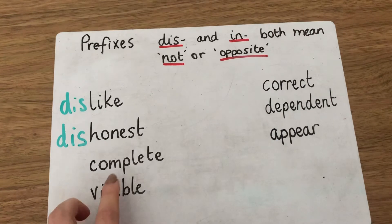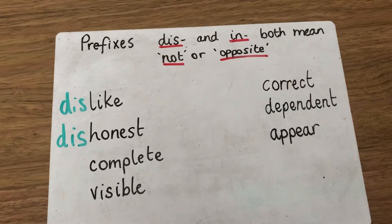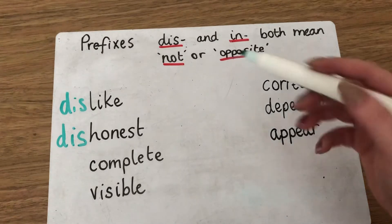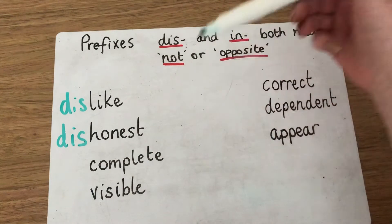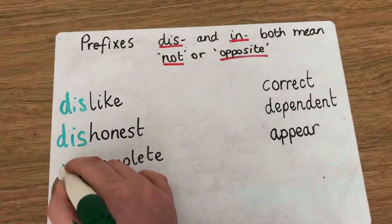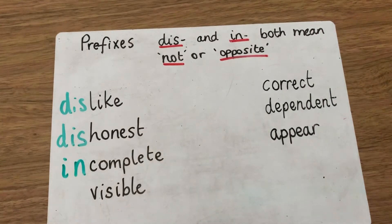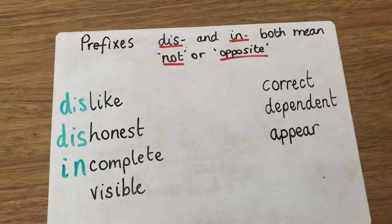Next we've got 'complete'. This can mean that something has finished — so 'my work is complete' means that you've finished it, it's all done. If we add one of our prefixes, we've got 'dis-complete' or 'incomplete'. So we would have 'incomplete'. My work is incomplete means it's not all finished, I haven't done it all yet.